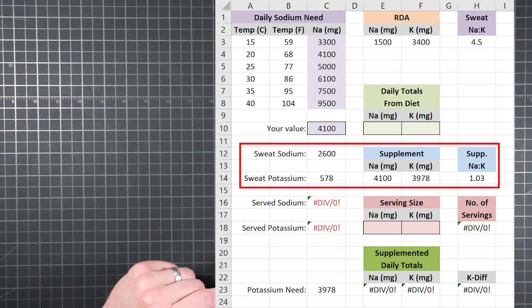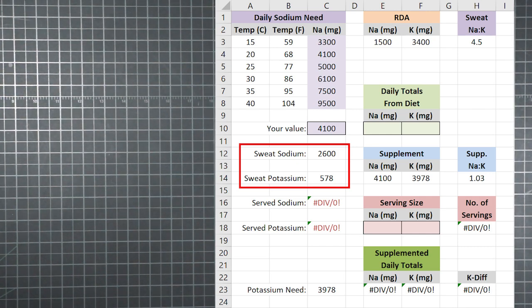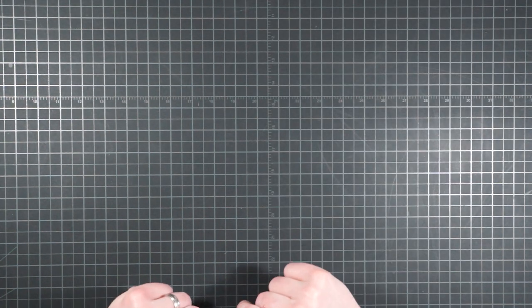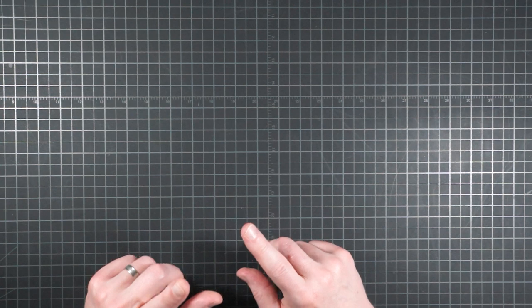So I find the temperature of my hiking environment from the table and enter it into the your value box. And that's my predicted daily sodium need. You'll notice that some of these boxes in the middle have already started updating. In particular, the values for sweat sodium and sweat potassium.